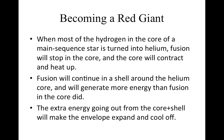When most of the hydrogen in the core of a main sequence star is turned into helium, fusion will stop in the core, and the core will contract and heat up. The fusion will continue in a shell around the helium core and will generate more energy than the fusion in the core did originally. This extra energy going out from the core plus shell will make the envelope expand and cool off, and that's what makes the red giant.